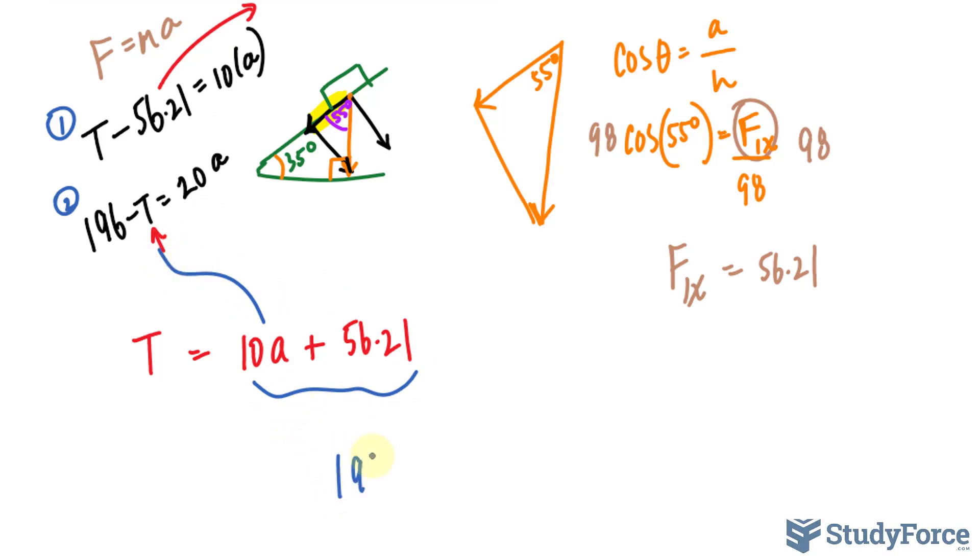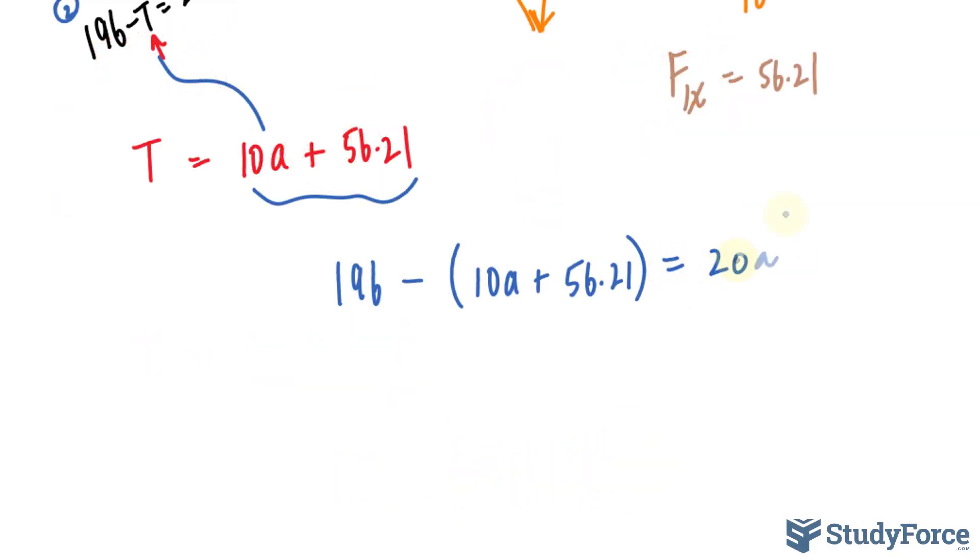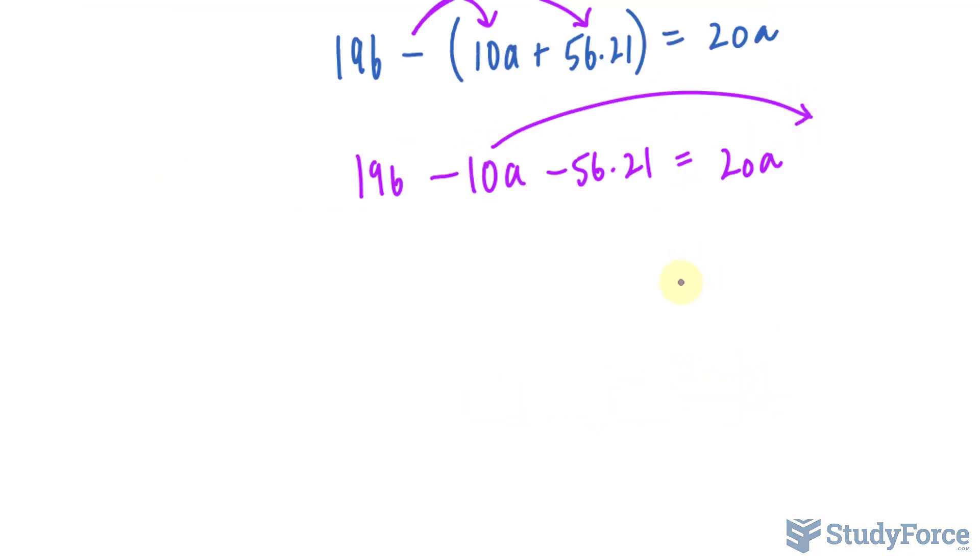196 minus bracket 10a plus 56.21 equals 20a. Now let's quickly expand this. We multiply this negative inside. We have 196 minus 10a minus 56.21 equals 20a. I'll take this term over where I have 20 plus 10, notice that this switches to plus because we're moving it over to the other side. That's 30a.